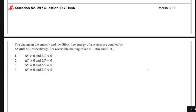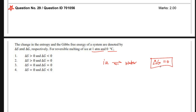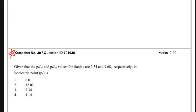The next question: for reversible melting of ice at 1 atm and 0°C, what are the signs of ΔG and ΔS? At 1 atm and 0°C, ice and water are in equilibrium, so ΔG = 0 — that makes options A and D incorrect. Since ice is melting, entropy increases, so ΔS > 0. Therefore option B is correct.